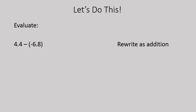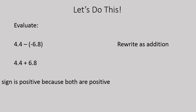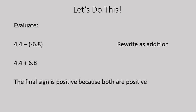Let's go ahead and actually evaluate some questions. 4.4 minus negative 6.8. We are going to rewrite this as addition, so instead of saying minus negative, we will say adding a positive number: 4.4 plus 6.8. The final sign is going to be positive because both numbers are positive, so you just add the numbers. 4.4 plus 6.8 gives you 11.2.